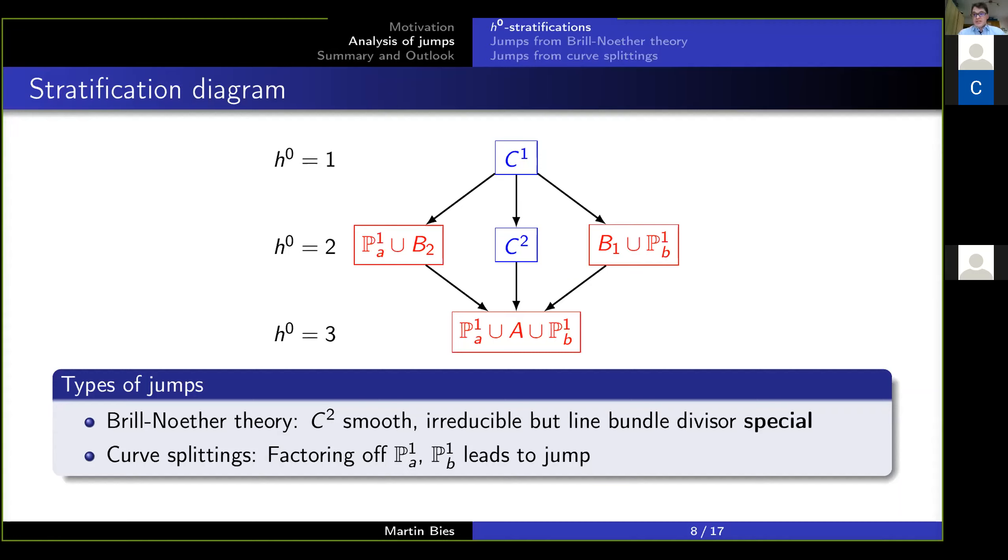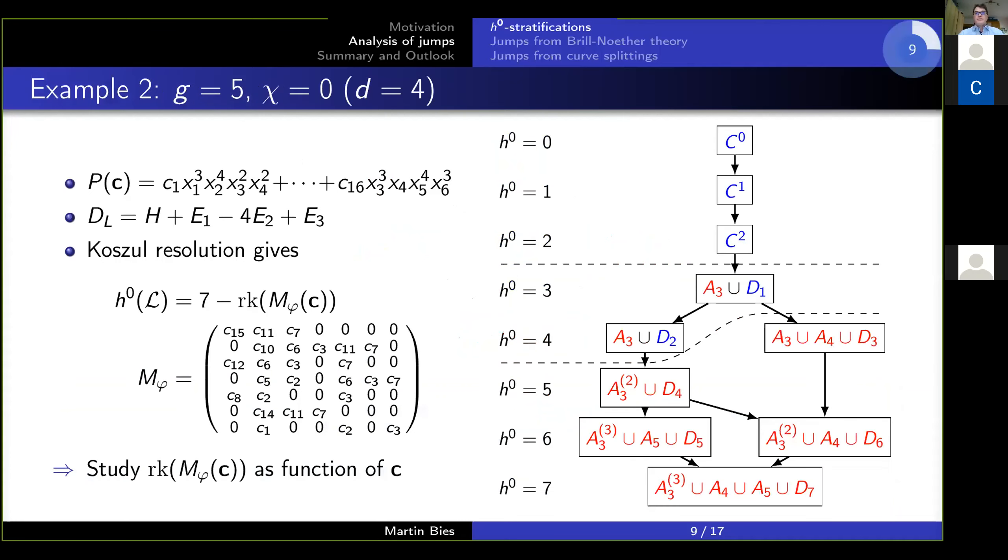So before I discuss these two in detail, let me give you one more example, a bit more involved, but still the philosophy applies. We have again some polynomial here, some line bundle, you work out the Koszul resolution, find the kernel, H^0 is the dimension minus rank of matrix. This time more complicated, 7 by 7 matrix.